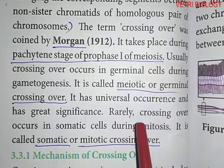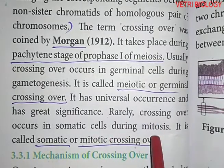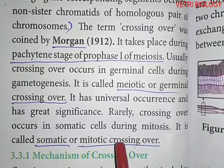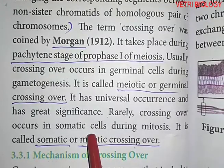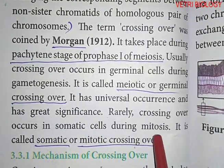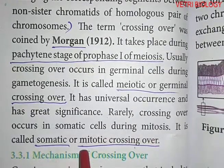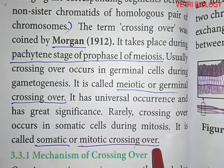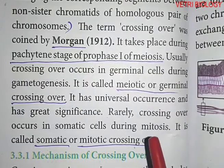Rarely, crossing over occurs in somatic cells — that is, body cells — during mitosis. This rare occurrence is called somatic or mitotic crossing over, as opposed to the germinal crossing over that occurs during meiosis in reproductive cells.